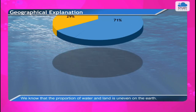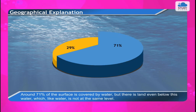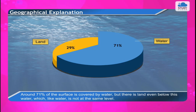We know that the proportion of water and land is uneven on the earth. Around 71% of the surface is covered by water, but there is land even below this water which, like the surface, is not at the same level.